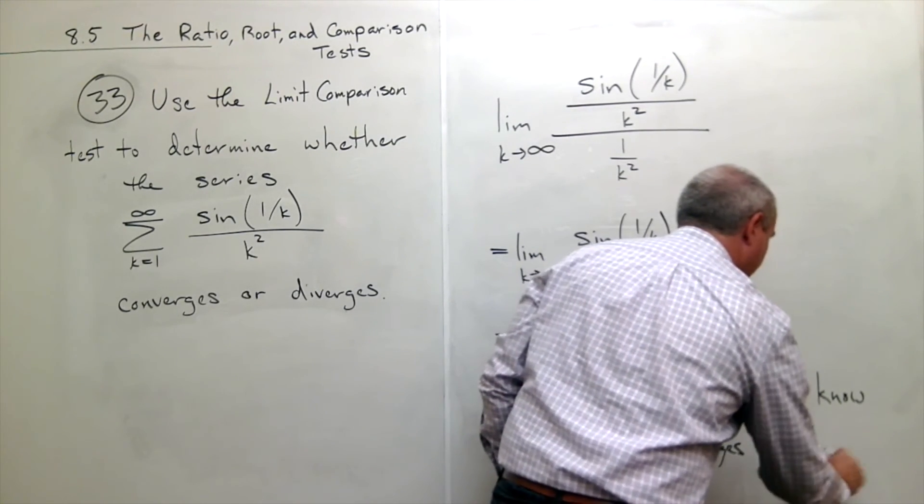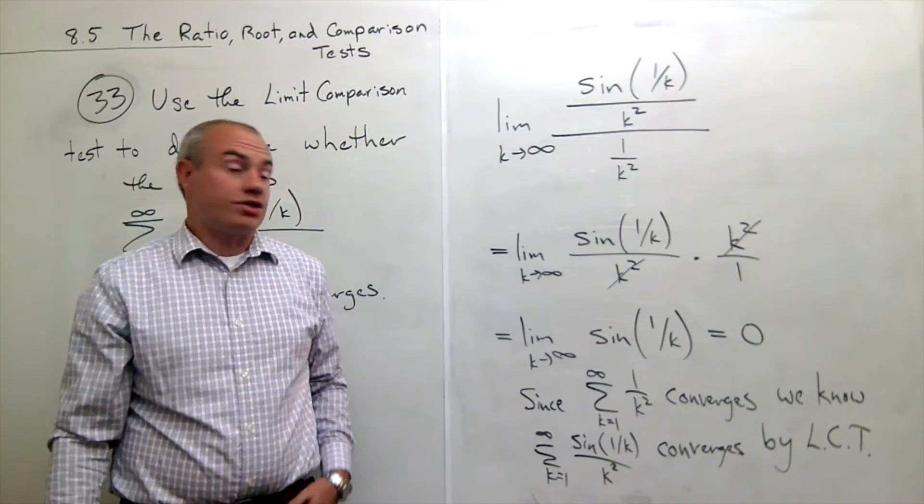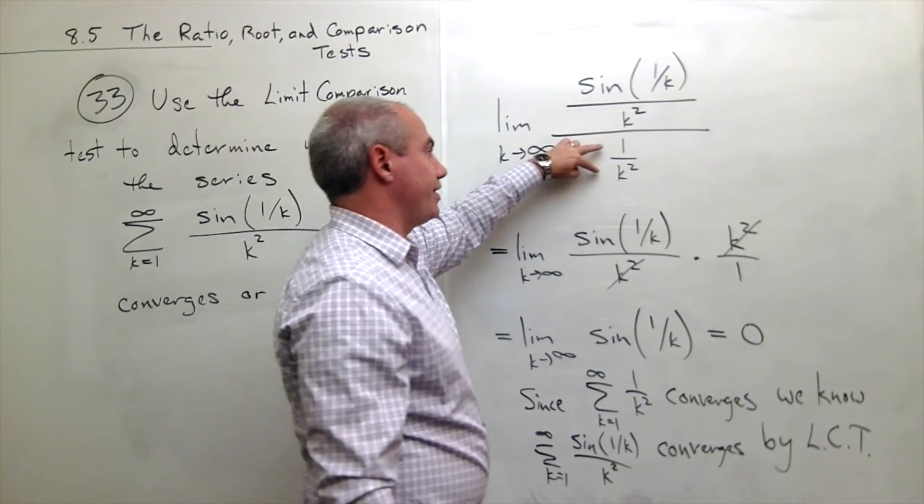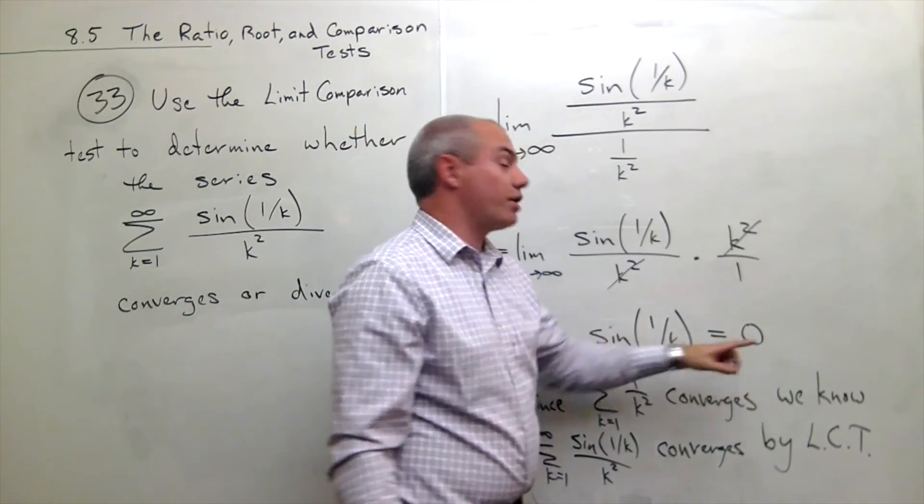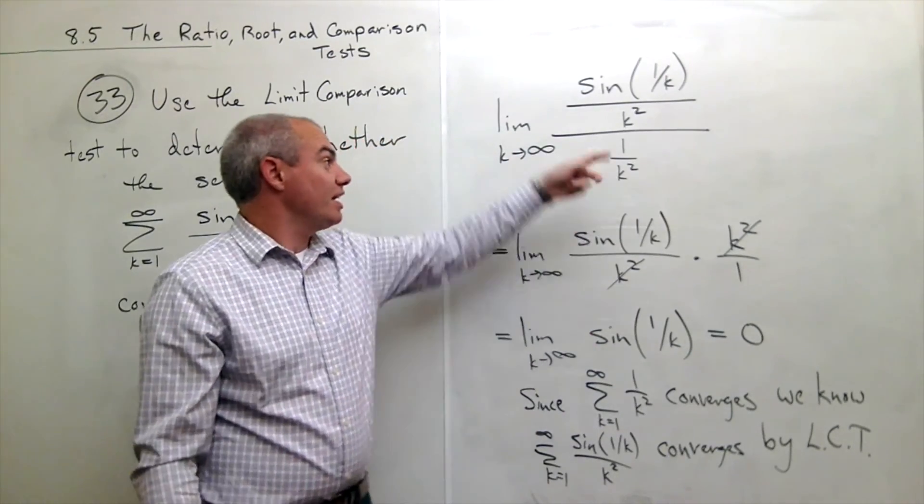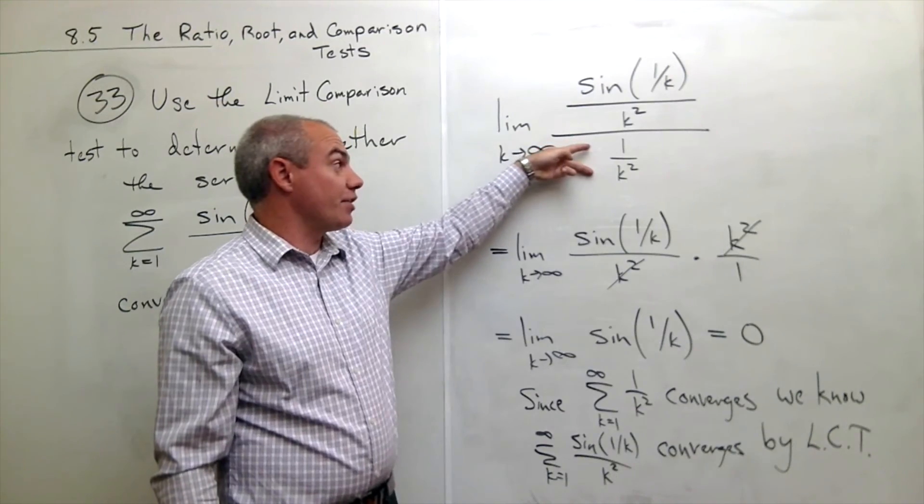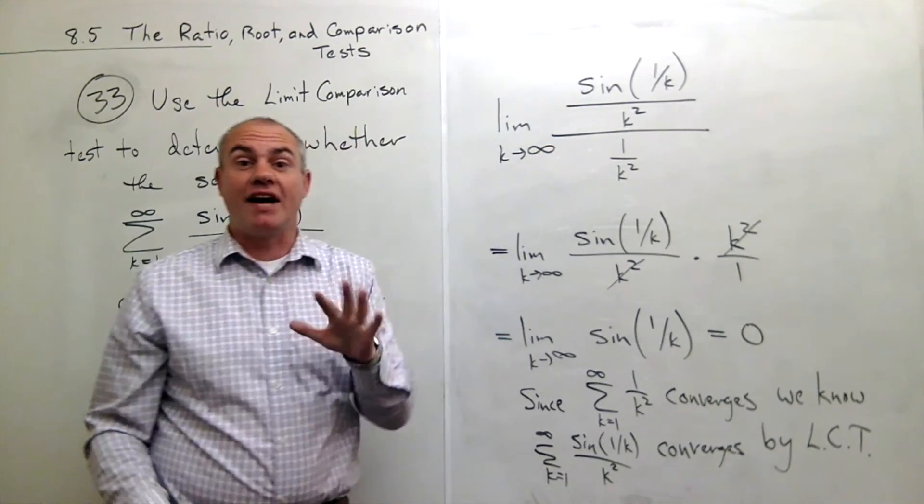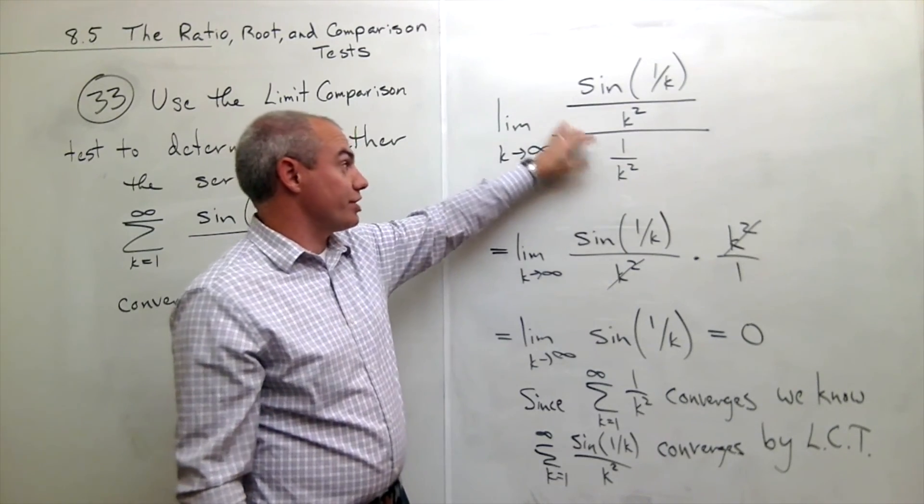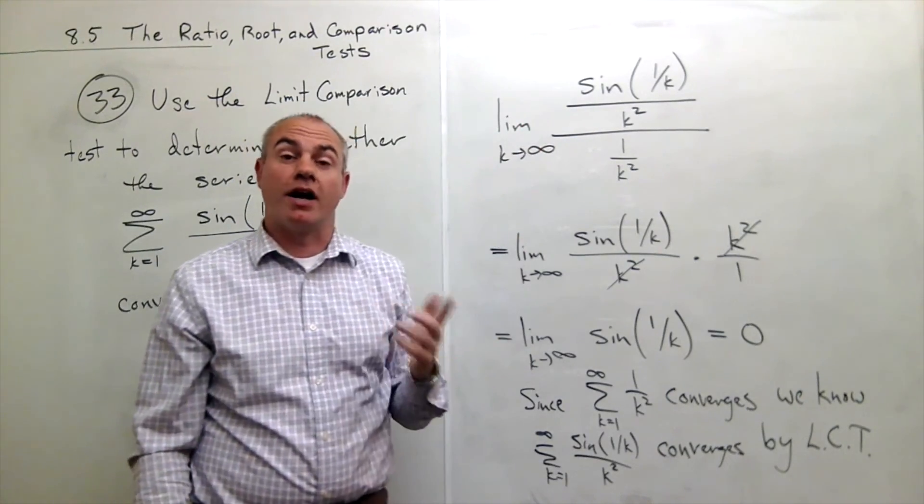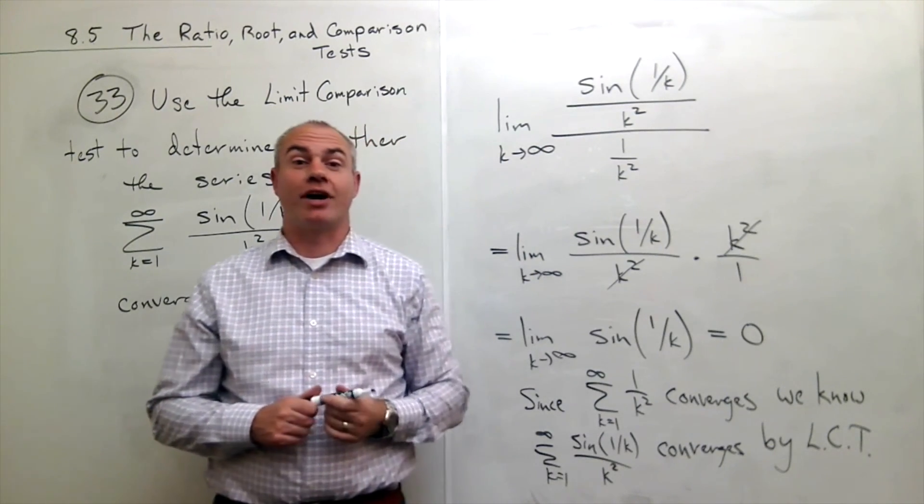So this is the limit comparison test. We started with this guy that we think it's kind of like. We compared them. We got 0. 0 only works out for us if the sequence that I put on the bottom, its series converges. If it diverges, 0 doesn't help us. But if this guy converges, then this guy converges as well. And it just so happens that this guy converges. So very good for us. And we're done.